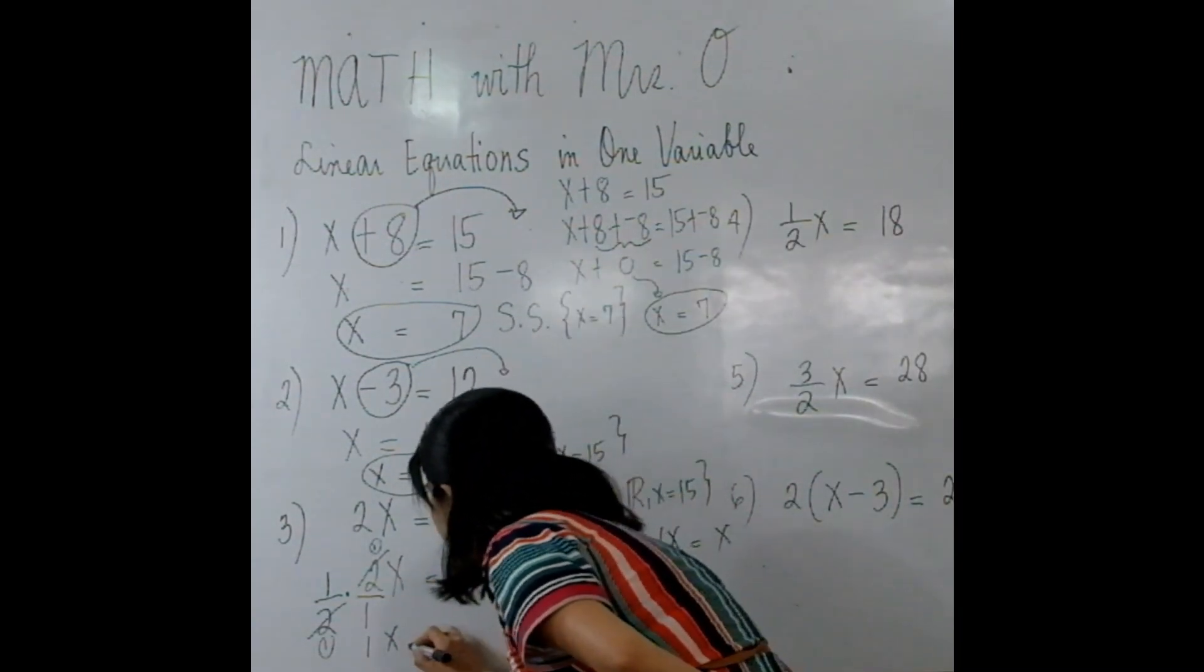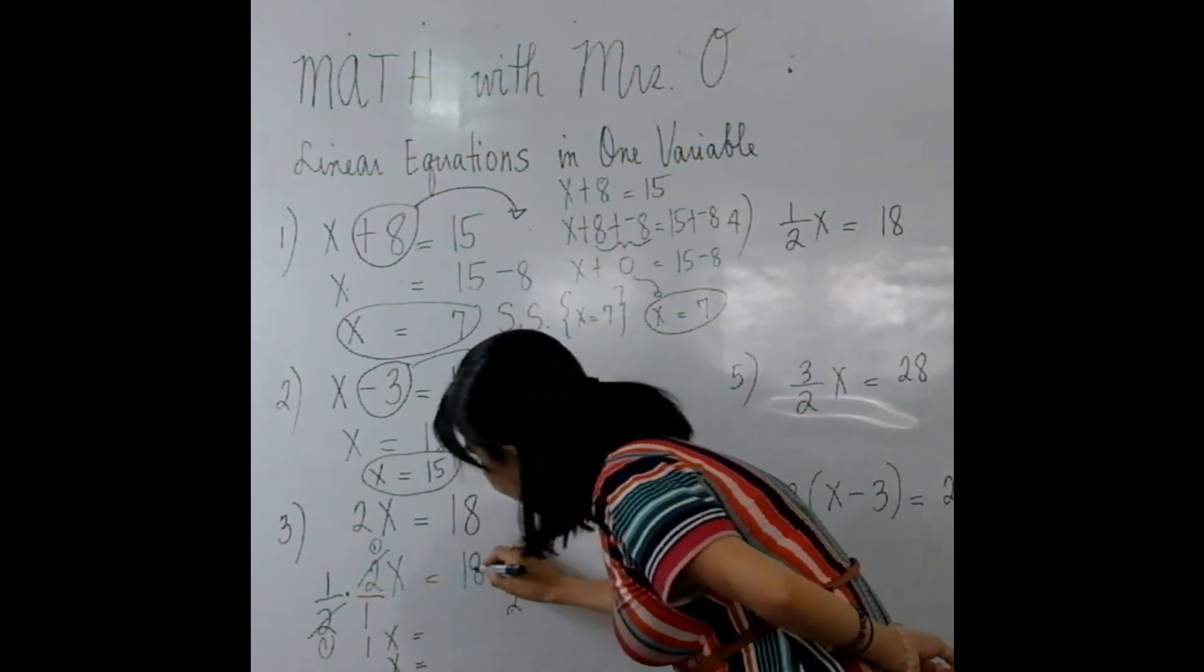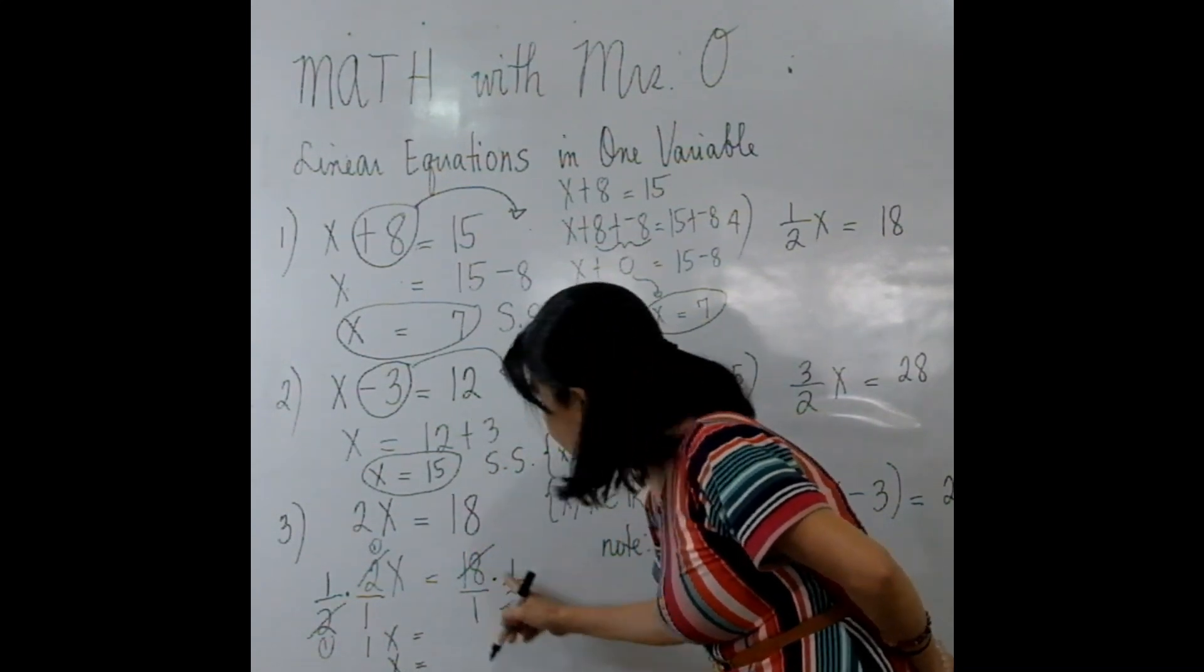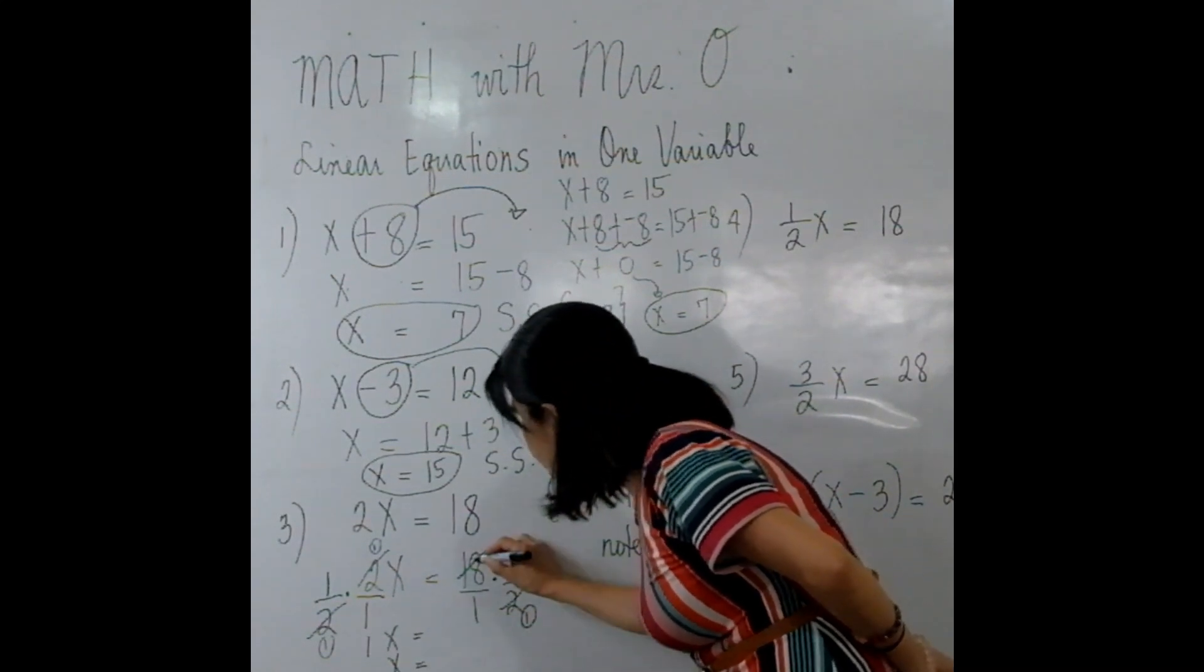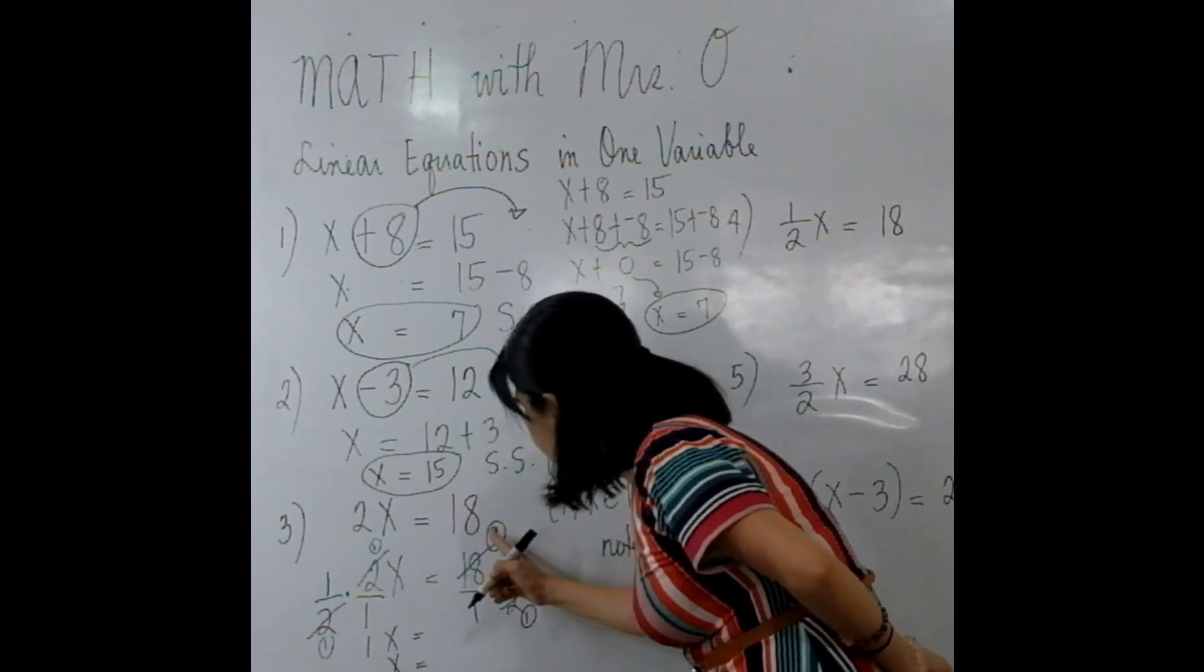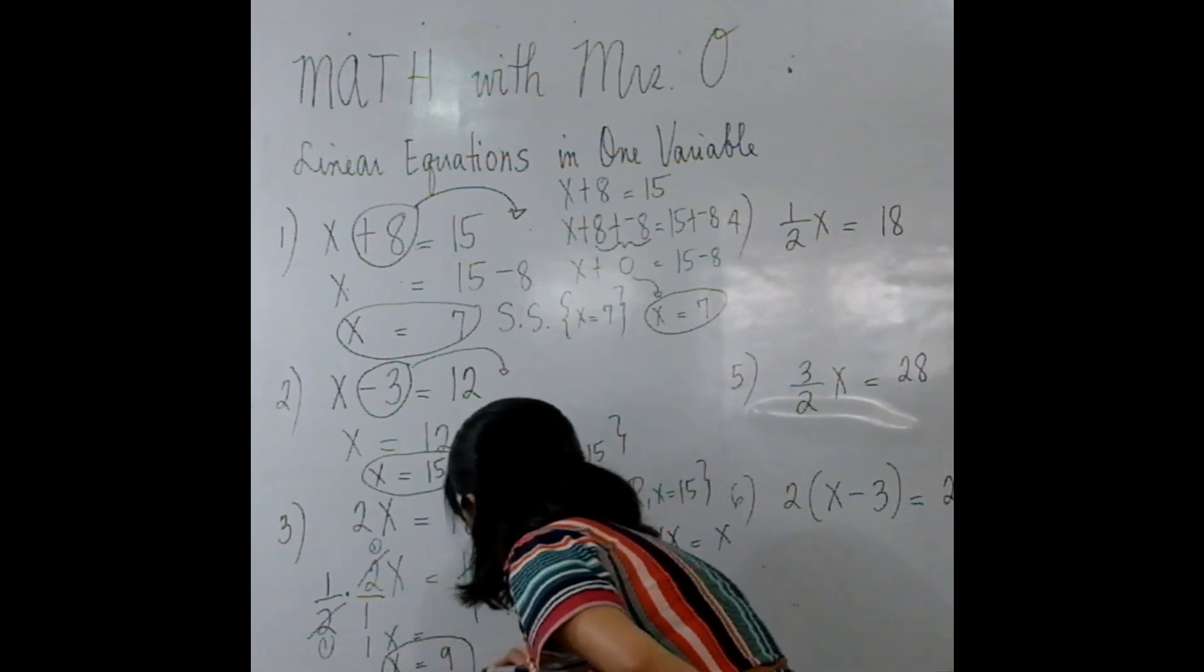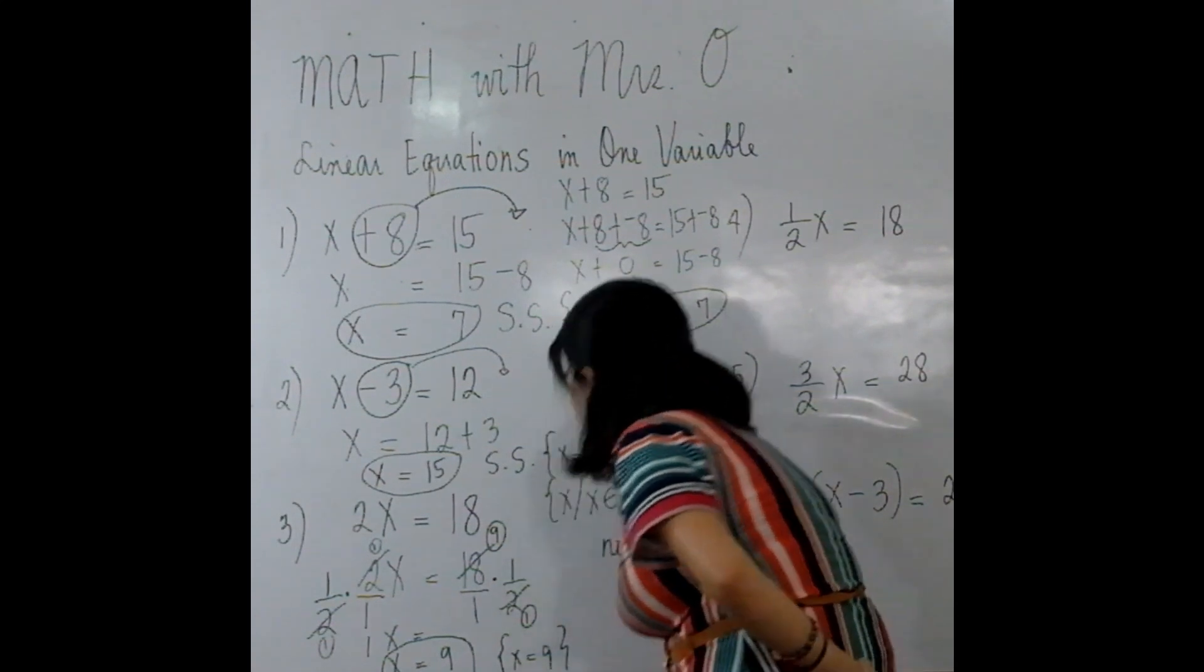So we have here 1X or X equals 18 over 1. So we can cancel 18 and 2. 18 and 2 are both divisible by 2. So 2 divided by 2 is 1, 18 divided by 2 is 9. 9 times 1 is 9 over 1 is 9. Then you can write here that X = 9 for your solution set.